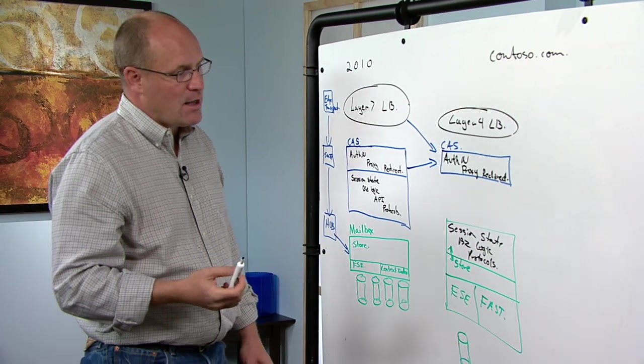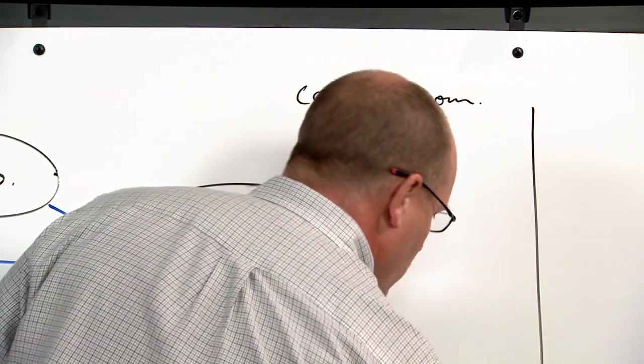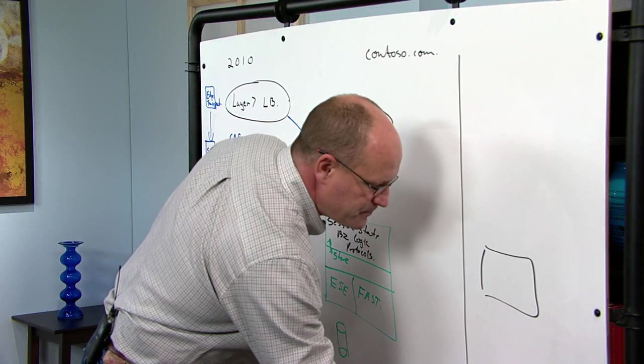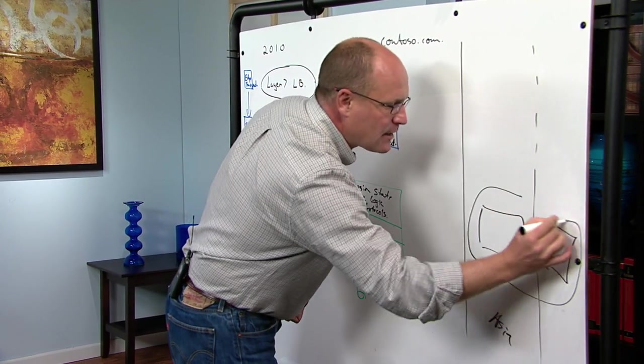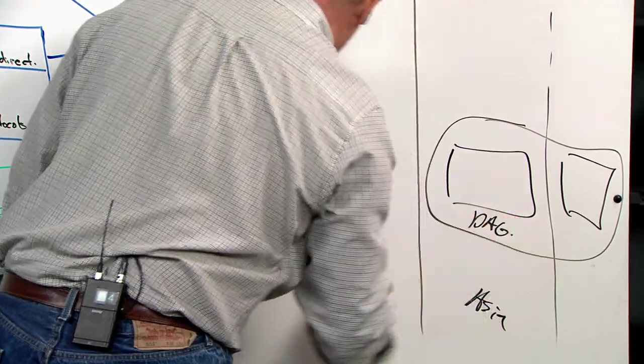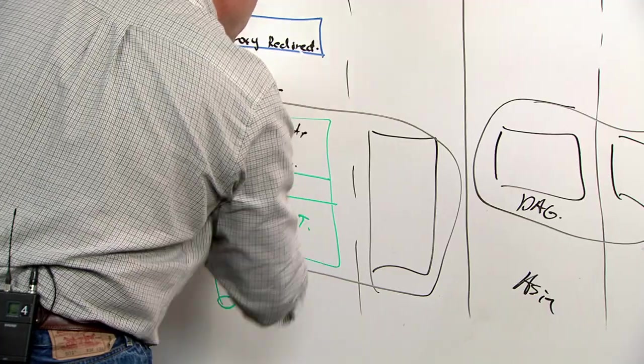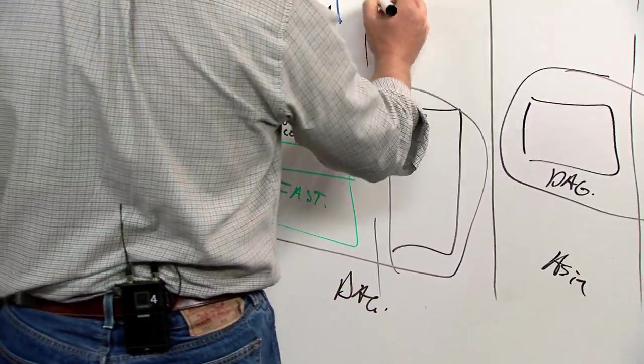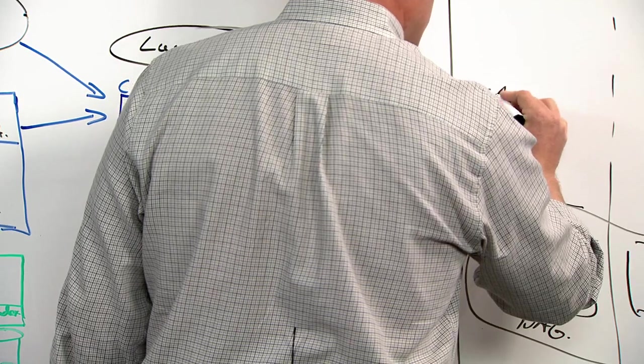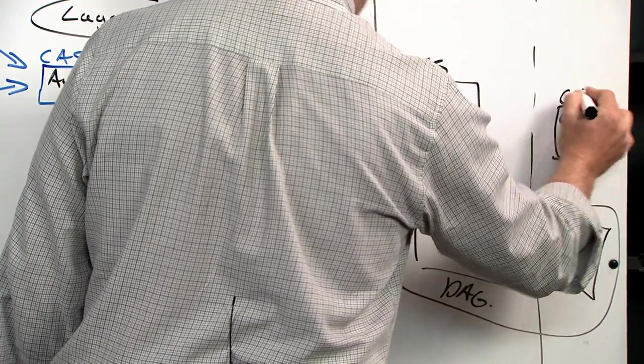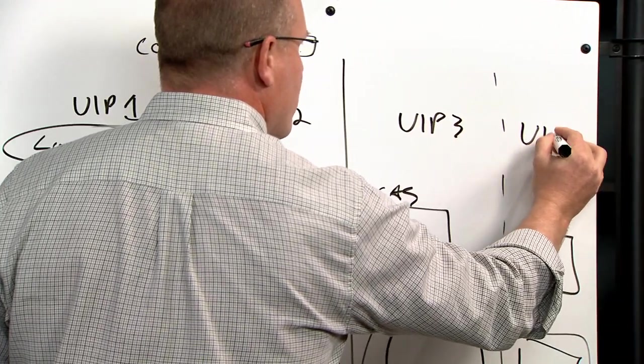For a large company that might have people that are working in multiple continents, you might have a world in which you have mailbox servers in Asia spread across, say, two different DCs for high availability. These guys are DAG. And in here again, you've got mailbox servers spread across multiple sites here. And in each of these sites, of course, you're going to have your own CAS array in both sites. So vip1, vip2, vip3, vip4.